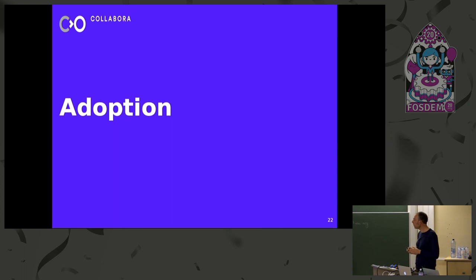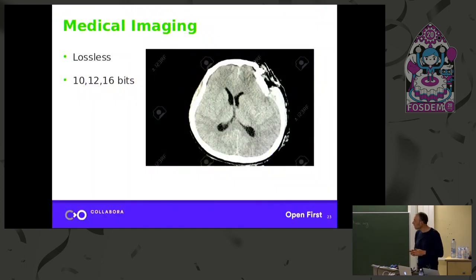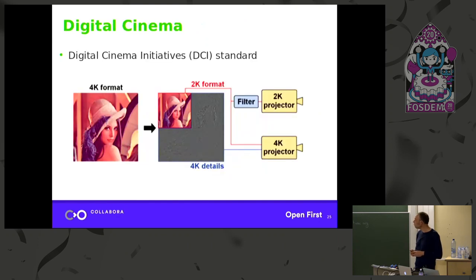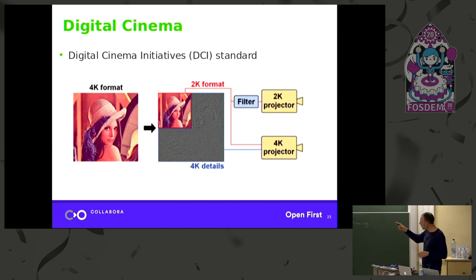With all these cool features, who adopted J2K? Medical imaging — it's considered the gold standard because you can do lossless, which is important for legal issues, and you can do high bit depths like 10, 12, and 16 bits. It's also popular in remote sensing because it can support 16,000 components and very large dimensions. And few people realize that whenever you watch a movie, you're actually watching JPEG 2000 decoding — it's the standard for digital cinema. The 4K image encodes a 2K image built in via resolution progression, so a 2K projector can just decode the low-level subband and throw away the rest.